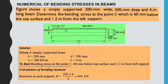Solution: For the simply supported beam with B = 200 mm, D = 300 mm, W = 200 kN/m, and length = 4 m. First, we calculate the bending moment. The reaction at each support is R = 200 × 4 divided by 2, which gives 400 kN, acting as a point load — 400 kN at each support.